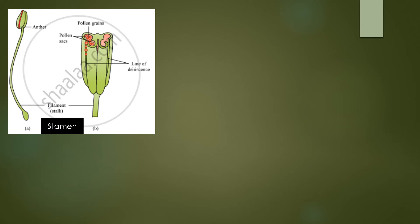If we cross-section the anther — here is the stamen with its anther and filament — and view it under a microscope, we can find that many pollen grains are present inside the pollen sac. These pollen grains are very important for the production of male gametes.